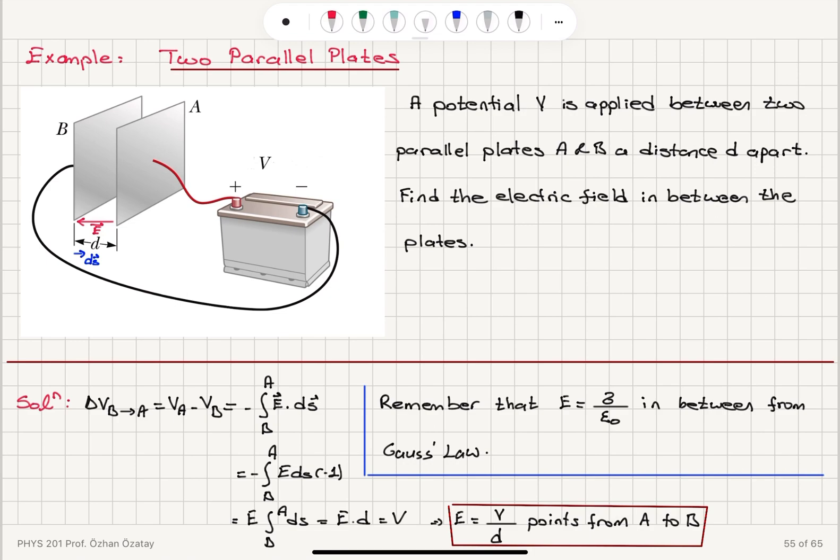OK, so we talked about two parallel plates connected to a battery. Plate A is positively charged. Plate B is negatively charged. The potential difference, potential of A with respect to B is positive.